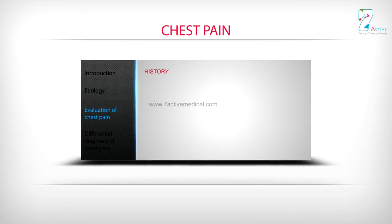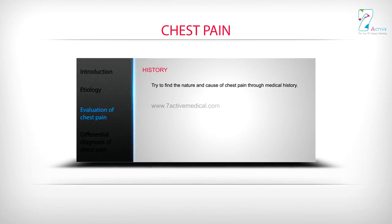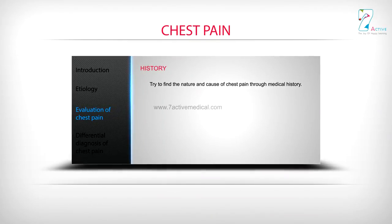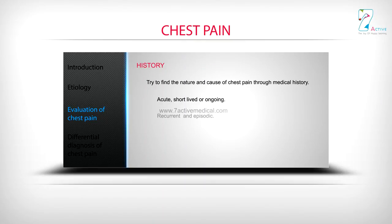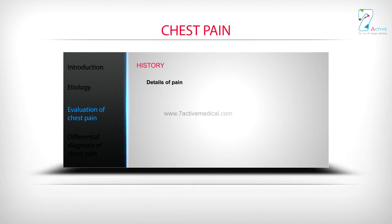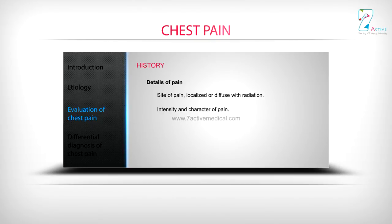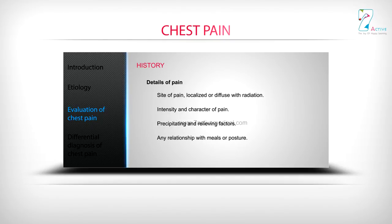Evaluation of chest pain. Try to find the nature and cause of chest pain through medical history: acute, short-lived or ongoing, recurrent and episodic, persistent. Details on pain include: site of pain, localised or diffuse with radiation, intensity and character of pain, precipitating and relieving factors, any relationship with meals or posture, and any variation with breathing, coughing and movements.